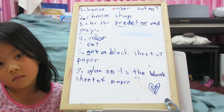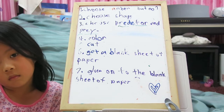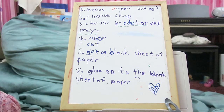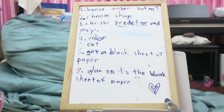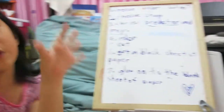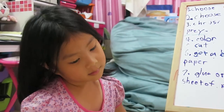One: choose a number but not one. Two: choose a shape. Three: choose predator and prey. Four: color. Five: cut. Six: get a blank sheet of paper or recycle. Seven: glue everything onto the blank sheet of paper — that means you glue everything on it.